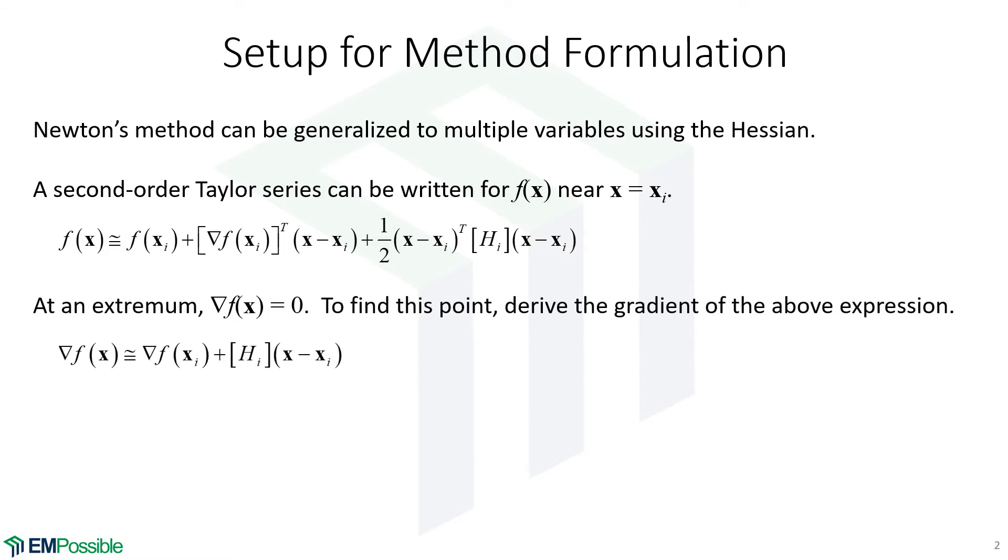So at an extremum, we recognize that the gradient of that multivariable function equals zero. In order to calculate that, we go up to the above function and calculate the gradient of this Taylor series. Here's where we end up. This is where we'll start on the next slide to derive the update equation for Newton's method.